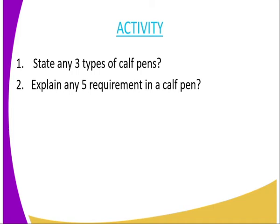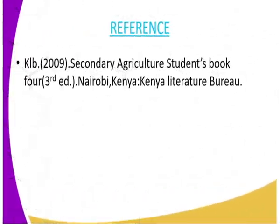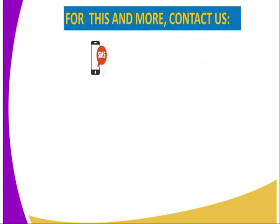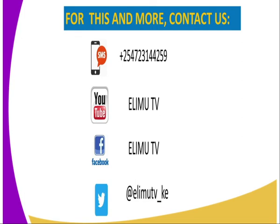We have come to the end of today's lesson. Your assignment: question one, state any three types of calf pen; question two, explain any five requirements of a calf pen. For reference, you can refer to the secondary agriculture student book, published by the Kenya Literature Bureau. For more information or clarification, you can reach us at LMTV via SMS, YouTube, Facebook, or Twitter at LMTV underscore KE.